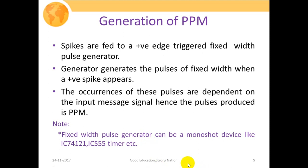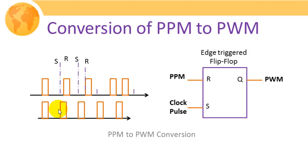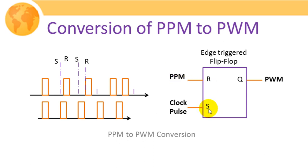This slide shows how to convert the pulse position modulation signal to the pulse width modulation signal using an edge-triggered flip-flop. We use an RS flip-flop where the reset input receives the PPM waveform and the set input receives fixed-duration clock pulses, and the output Q gives the PWM waveform. The upper figure shows the PPM output and the lower side shows the constant-duration clock pulses.